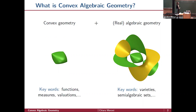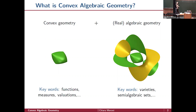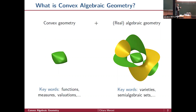On the other hand, if we move to real algebraic geometry, one of the things people are interested in are semi-algebraic sets. These are Boolean combinations of polynomial inequalities: you have a bunch of polynomial inequalities, you intersect finitely many of them, and then take a finite union of these sets. This is a semi-algebraic set, and it lives in the real space.